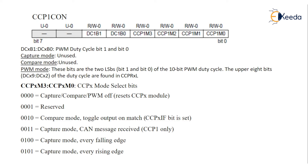We can use capture, compare, or PWM one at a time — not all three simultaneously. In the CCPxCON 8-bit control register, bits DC1B1 and DC1B0 are used for the PWM duty cycle. In capture mode and compare mode these two bits are not used. In PWM mode, these two bits are the 2 LSBs of the 10-bit PWM duty cycle.